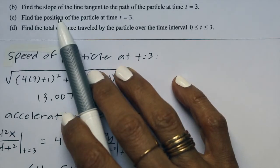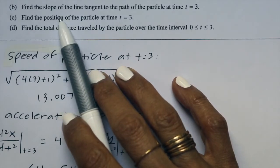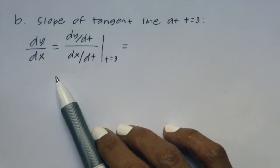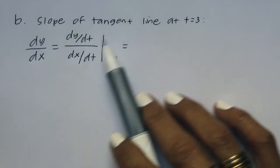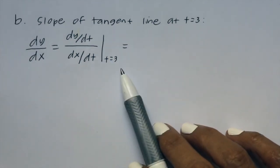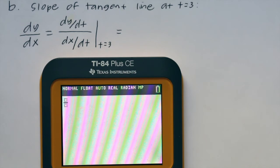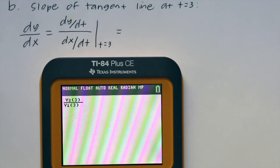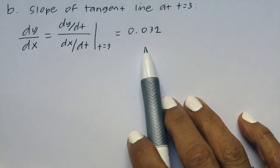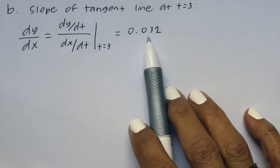Part B says find the slope of the line tangent to the path of the particle at time t equals 3. With parametric equations, to find slope you use dy/dx, which equals dy/dt over dx/dt, then plug in 3 for t. Our dy/dt is y2, so we have y2 at 3 over y1 at 3, and we get 0.032. So our slope of the tangent line when t equals 3 is 0.032.